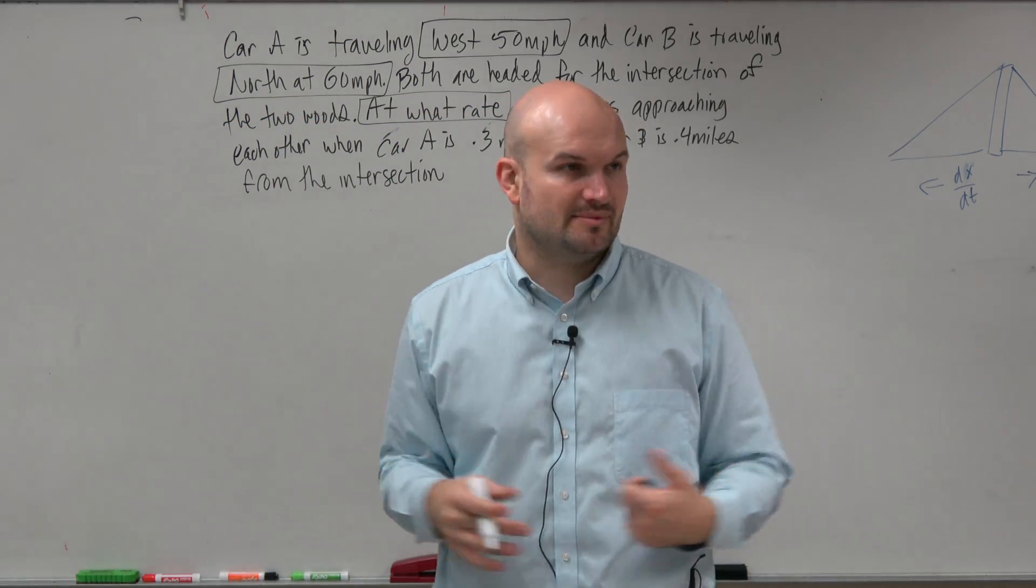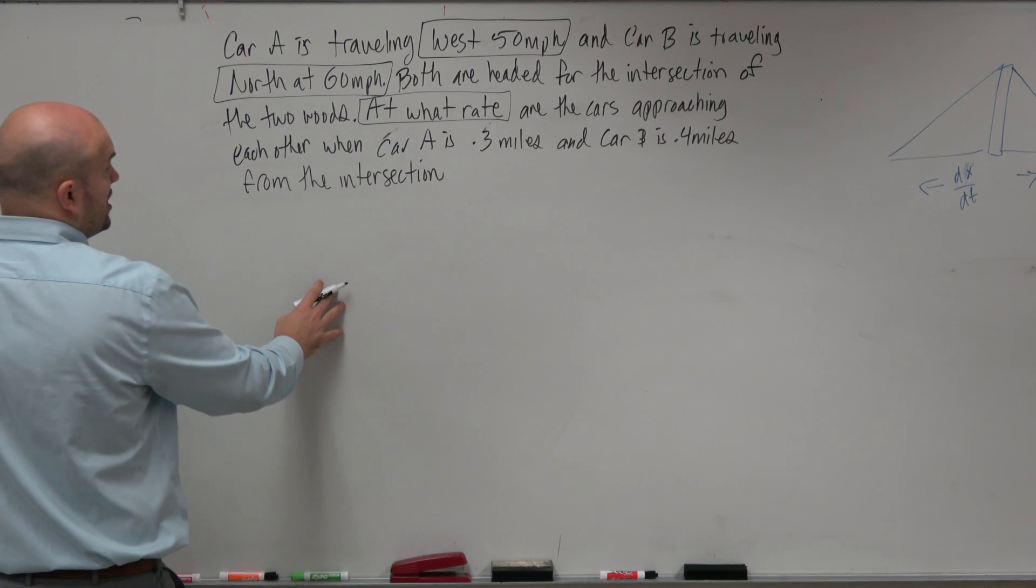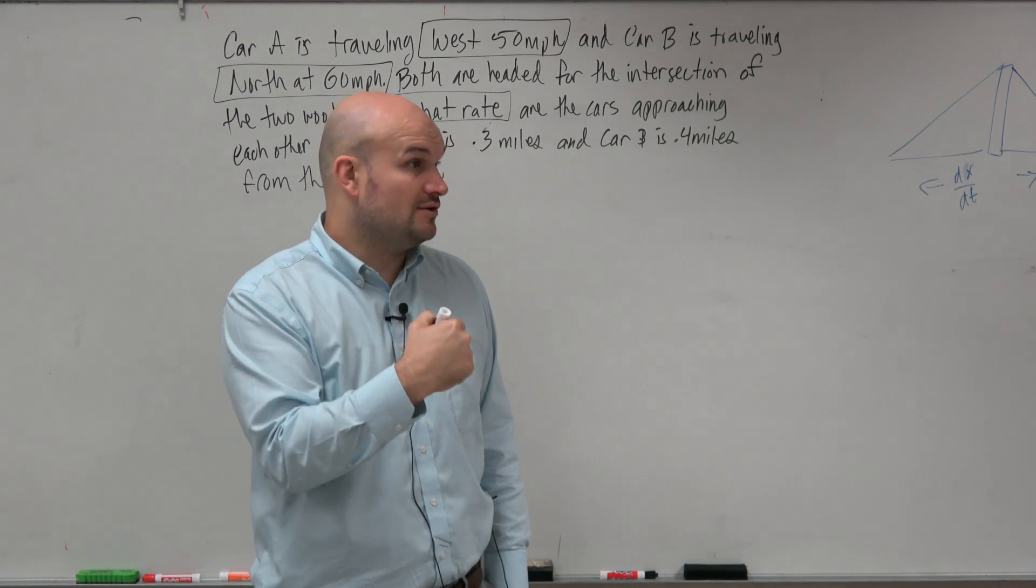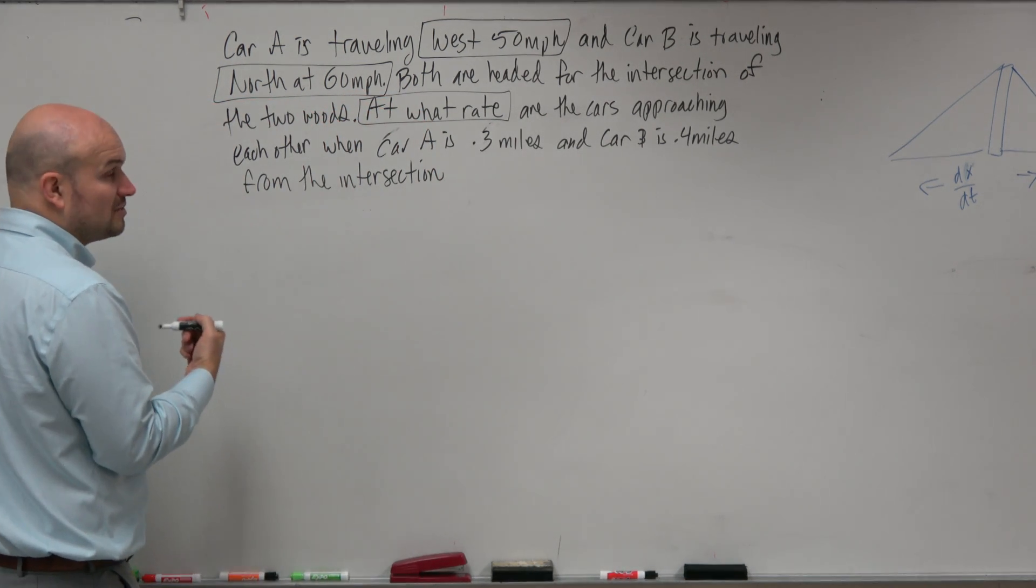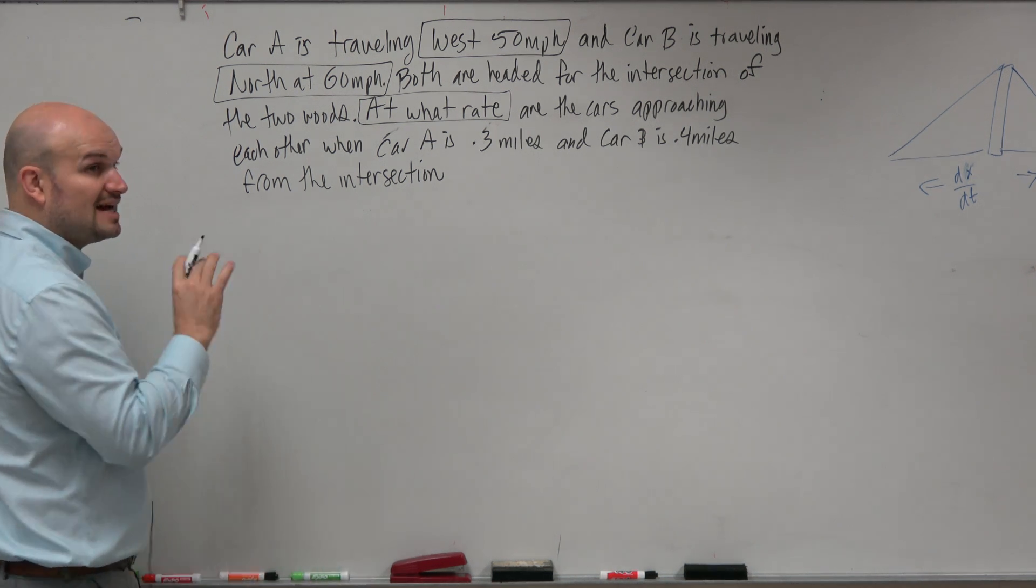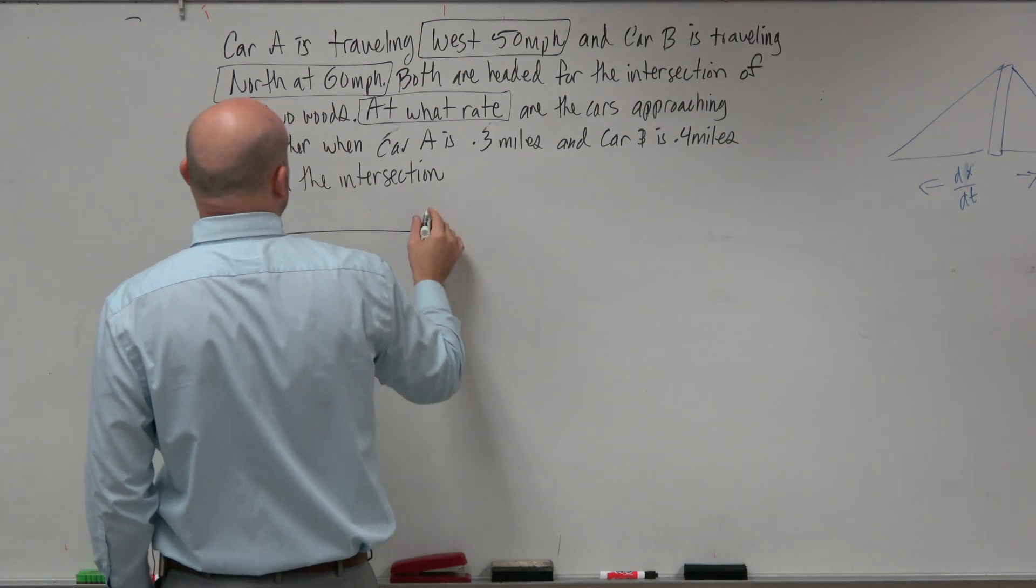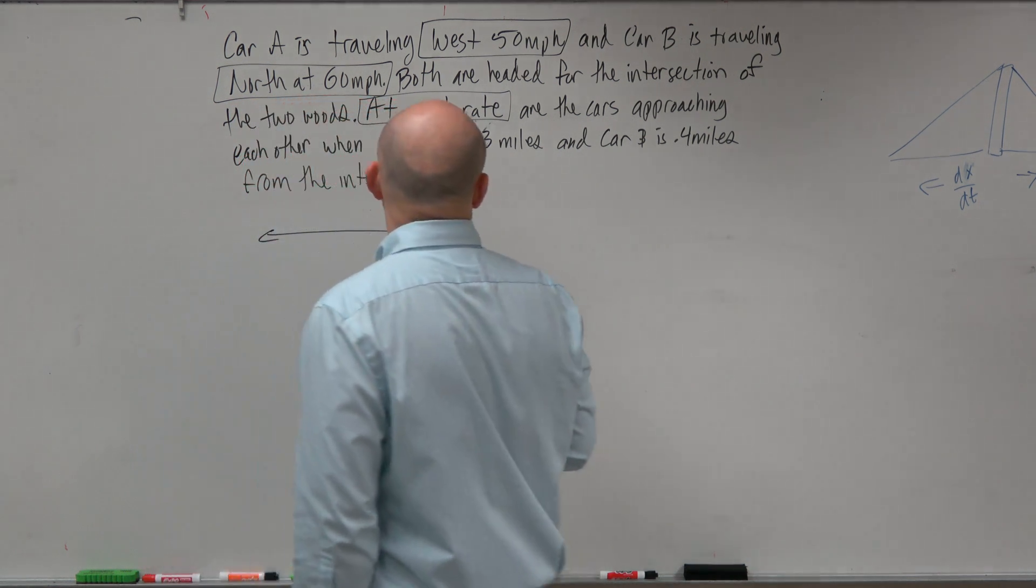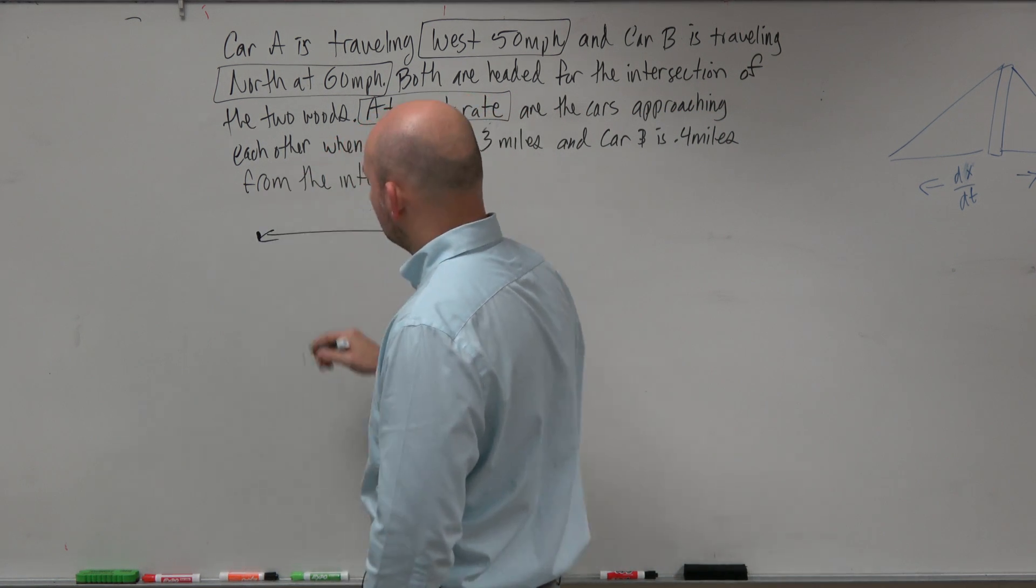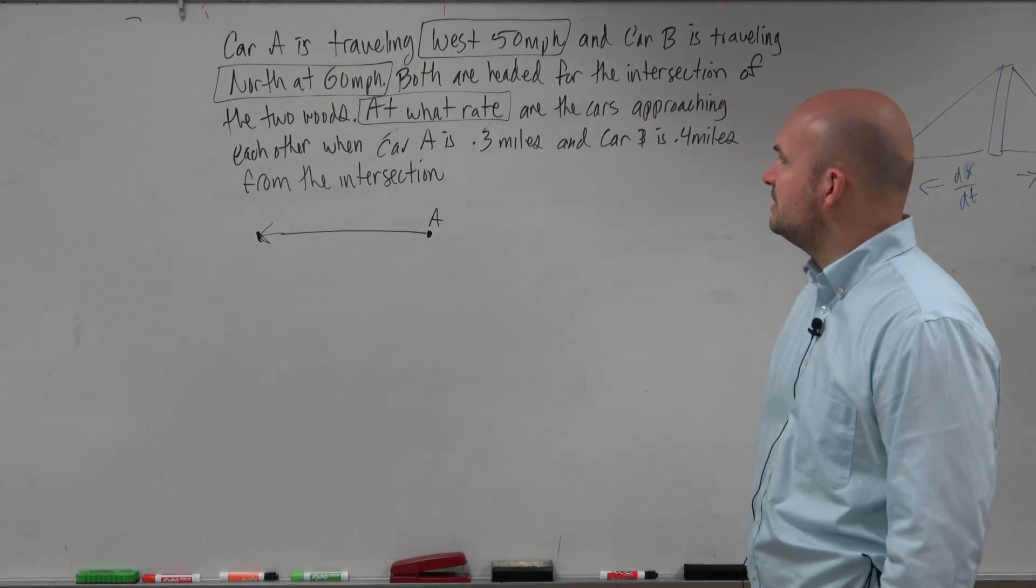I think the best thing would just start with drawing a picture to see what's going on. If we have a car driving west, driving west is going to the left. That's going to be important because when we're talking about our rate, we're going to be looking at negative values going west. That is identified to us, west as going negative. Let's just draw the vectors. That's going to be car A.